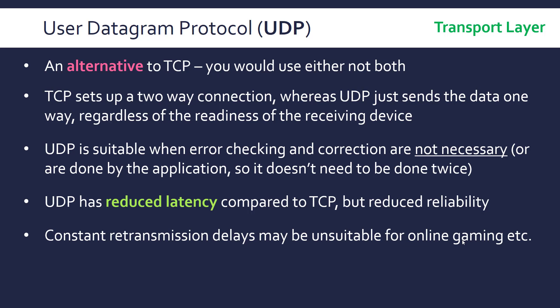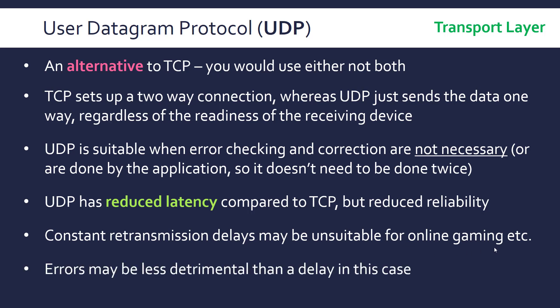Those potential constant retransmissions in TCP might be unsuitable for certain purposes like online gaming, where an error is less detrimental than a delay. A couple of dropped packets might not be a big issue, but even a small latency difference can make quite a big difference, which is why you might use UDP over TCP when an instant response is needed.